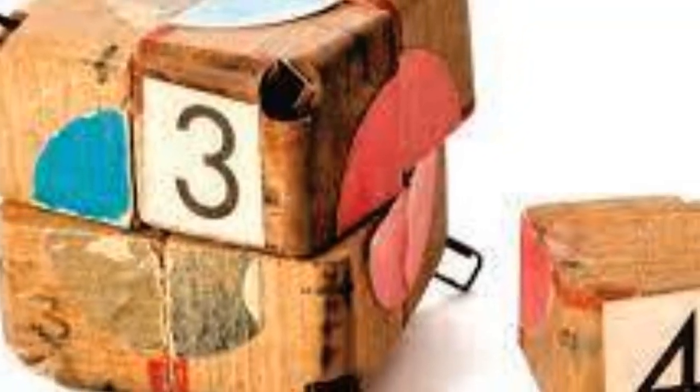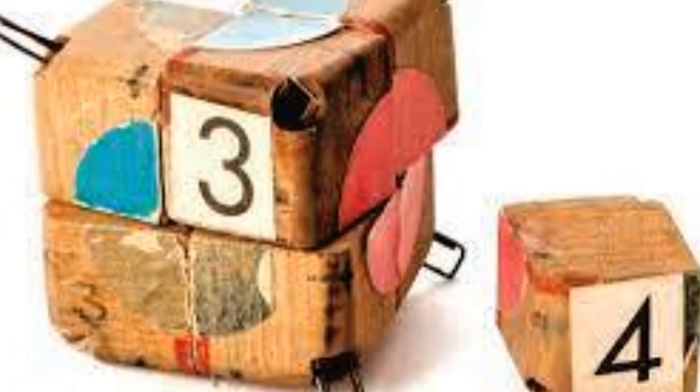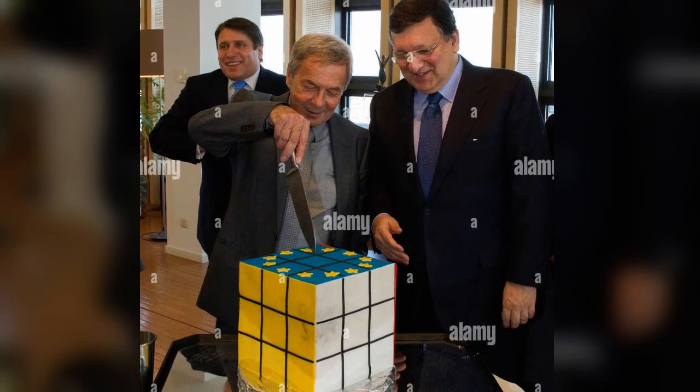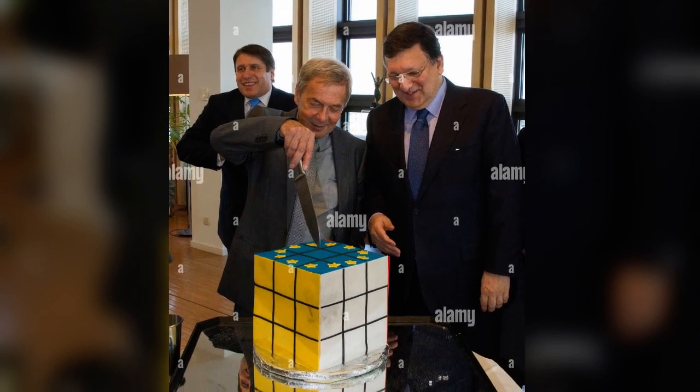The first ever Rubik's Cube was built using wood, rubber bands, and paper clips. Without these, the whole cube would fall apart. Still to this day, Erno lives at the age of 77 and has successfully sold 350 million Rubik's Cubes.